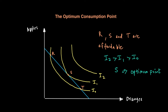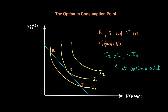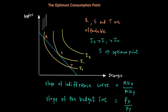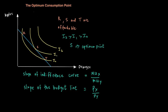If the budget line is tangent to the indifference curve, they also have the same slope. The slope of the indifference curve is MUX over MUY, while the slope of the budget line is PX over PY. Since point S is where the indifference curve is tangent to the budget line, the budget line slope equals the indifference curve slope — in other words, MU of X over MU of Y equals PX over PY.